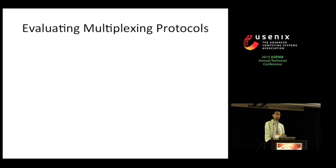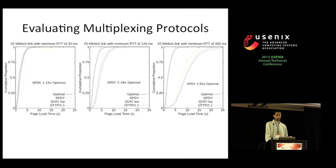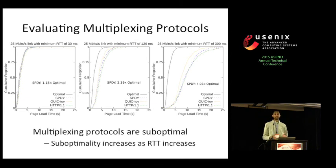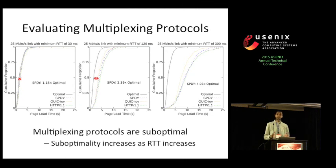We loaded the Alexa top 500 web pages over more than 100 different network configurations with each protocol. Here are representative results for 25 Mbps links with RTTs from 30 to 300 milliseconds. As you can see, in each network configuration each protocol is suboptimal. More importantly, the suboptimality increases as RTT increases. At 30 milliseconds the protocols are fairly bunched up close to optimal, but when we increase to 120 milliseconds the gap widens, and widens even further at 300 milliseconds.